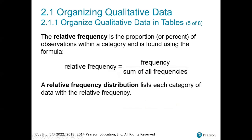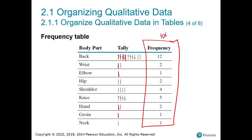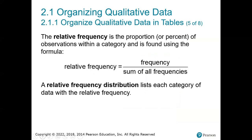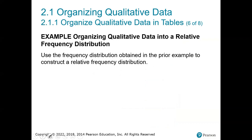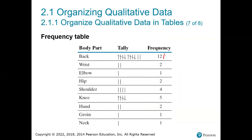The next thing you can calculate is what is called the relative frequency. Relative frequency is the proportion or percent of observations within a category. The formula takes how many of each category there were and divides it by the total. So I'm going to take every single value and divide it by 30.